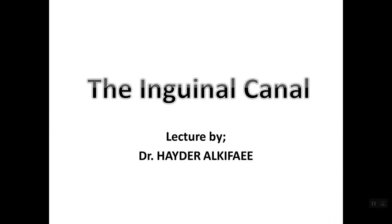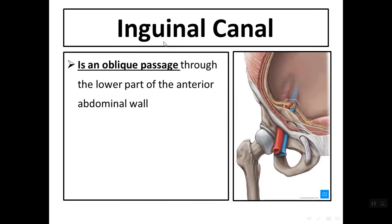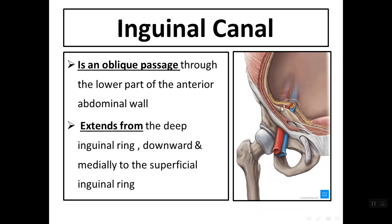Today's lecture is about the inguinal canal. The inguinal canal is an oblique passage through the lower part of the anterior abdominal wall. It extends from the deep inguinal ring downward and medially to the superficial inguinal ring. It can be regarded as an intermuscular cleft passing from the deep inguinal ring downward and medially, in between the muscles, to the superficial inguinal ring.